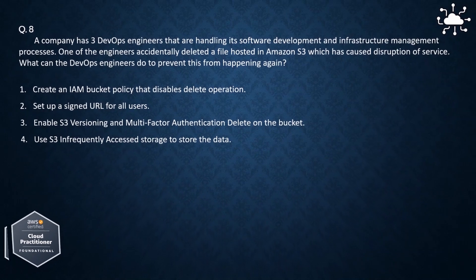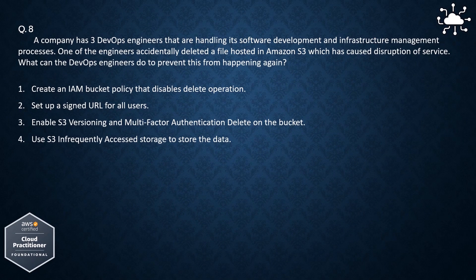Question 8. A company has three DevOps engineers handling software development and infrastructure management. One of the engineers accidentally deleted a file hosted in Amazon S3, causing disruption of service. What can the DevOps engineers do to prevent this from happening again?